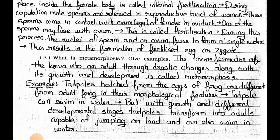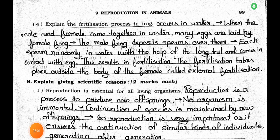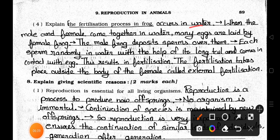Question 4: Explain the fertilization process in a frog. Answer: The fertilization process in a frog occurs in water. When the male and female come together in water, many eggs are laid by the female frog. The male frog deposits sperms over them. Each sperm swims randomly in water with the help of its long tail and comes in contact with the egg — this results in fertilization. The fertilization takes place outside the body of the female, called external fertilization.